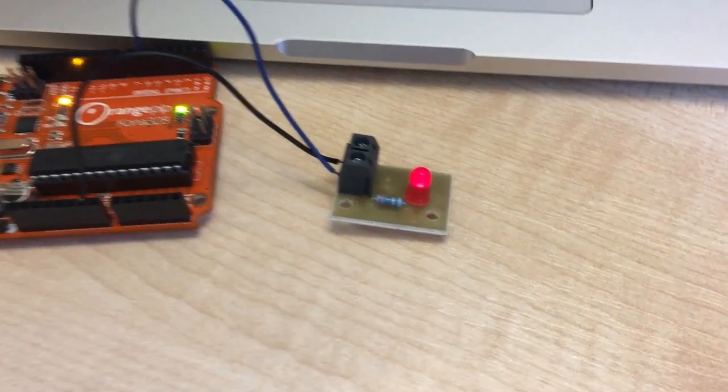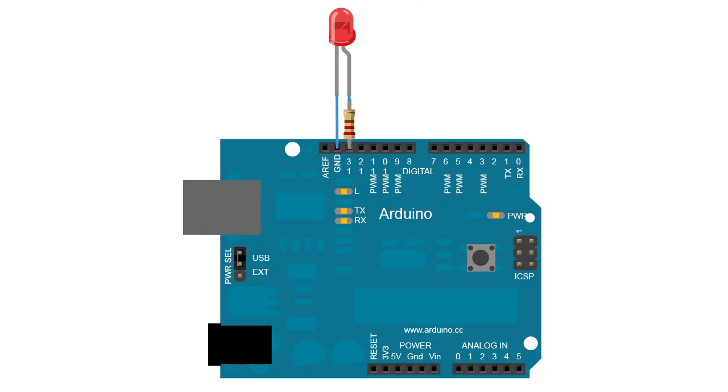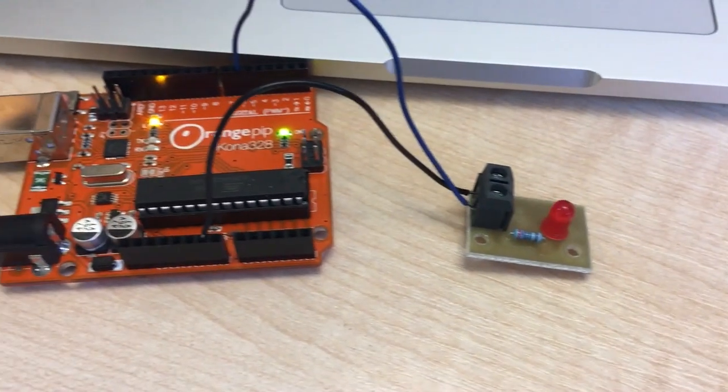So here we have my basic LED circuit, which is just a 220 ohm resistor and a red LED, hooked up to my Arduino.